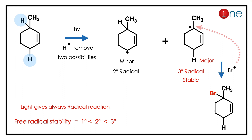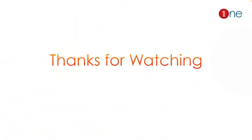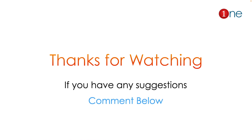The tertiary radical is the major intermediate, and bromine attacks it to give the final product at the methyl carbon. The key concept here is: the more stable the intermediate, the more it leads to the major product. That's all from this video — thanks for watching.